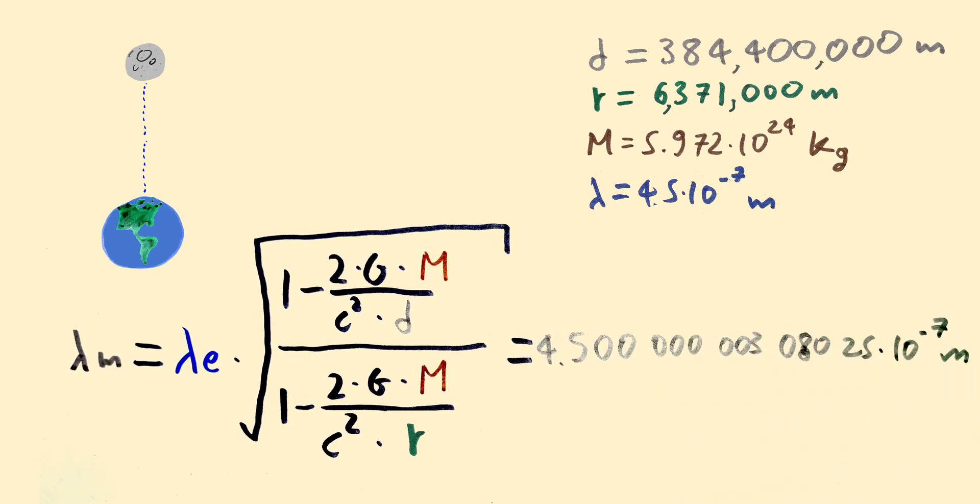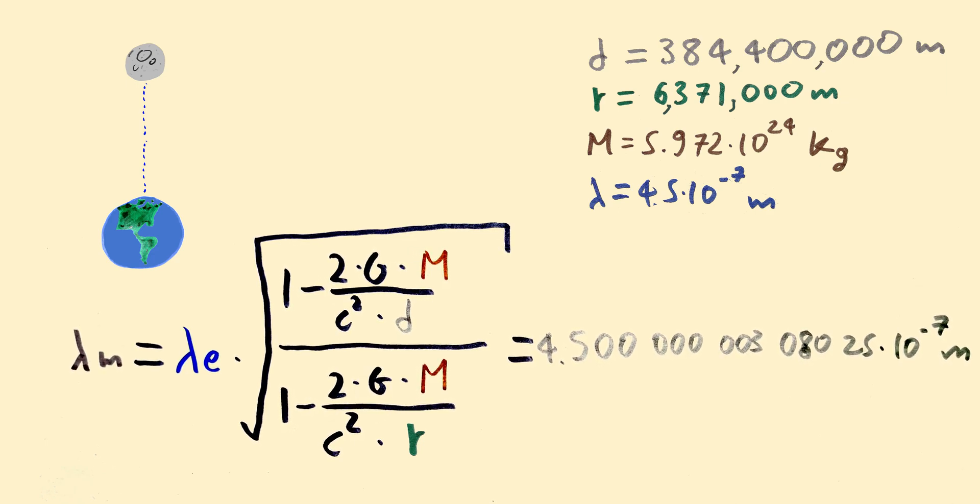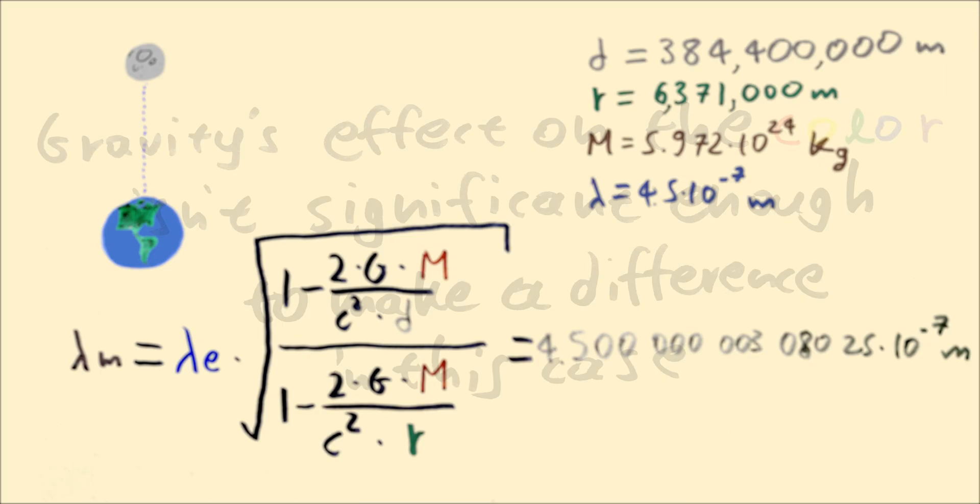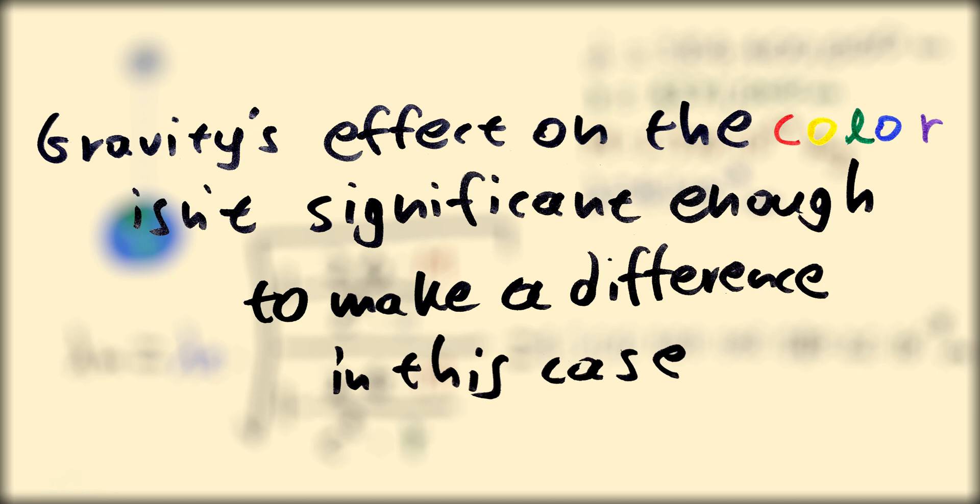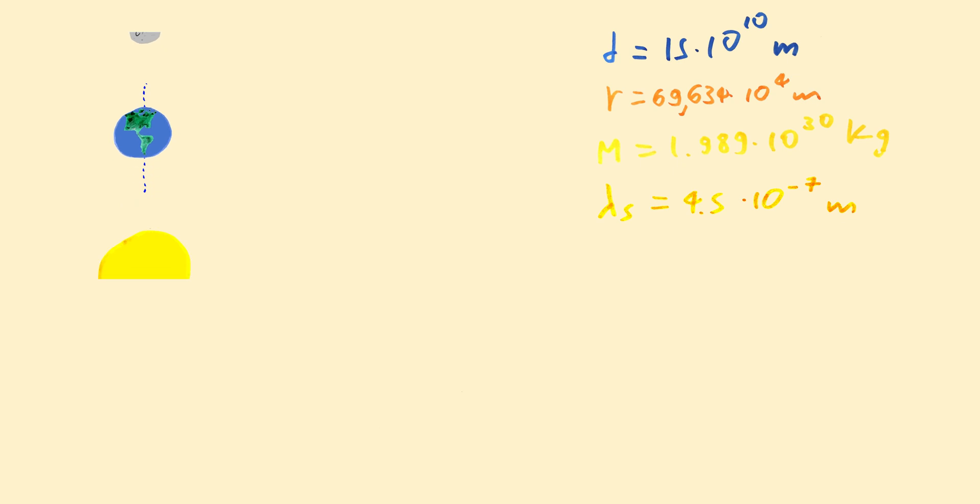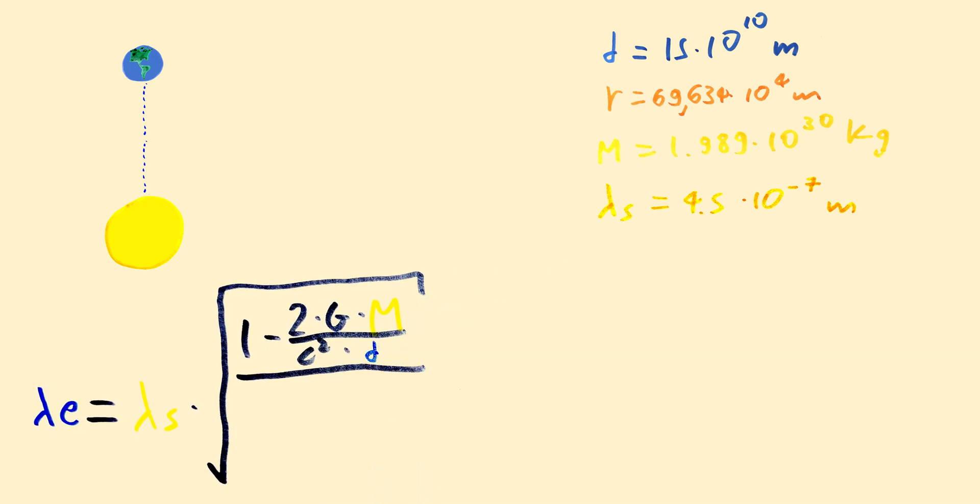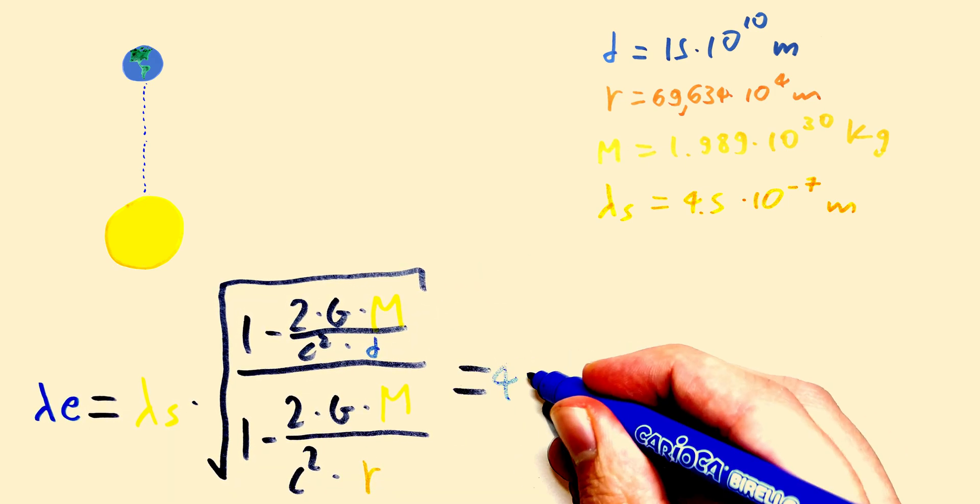If you do the math, you find that the difference is so small, the light barely changes any color at all. So the astronaut on the moon sees the laser blue as well. Gravity's effect on the color isn't significant enough to make a difference in this case. The same happens for the light the sun emits, but even in the sun's case, if you do the calculation, you find that it still doesn't matter very much.